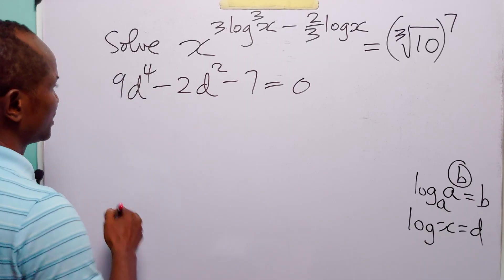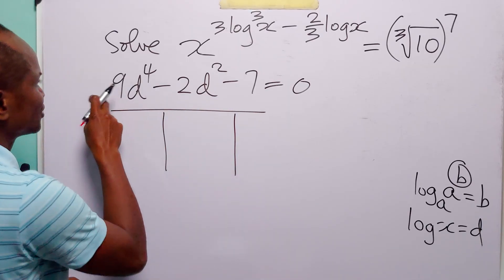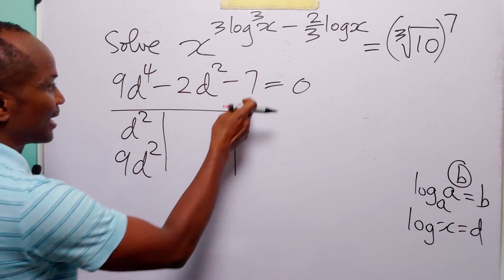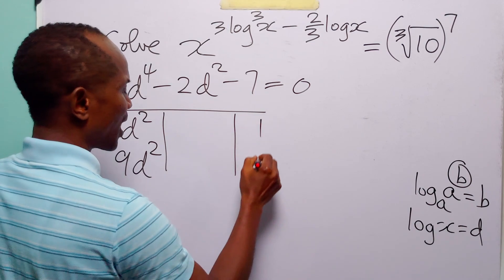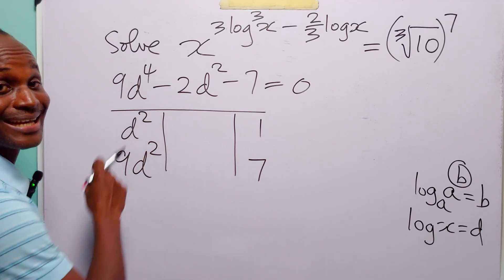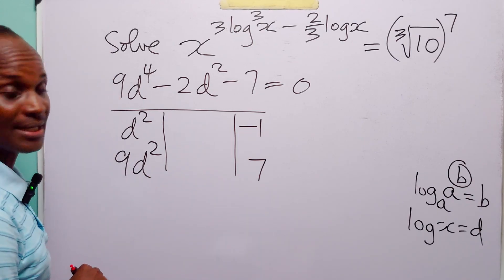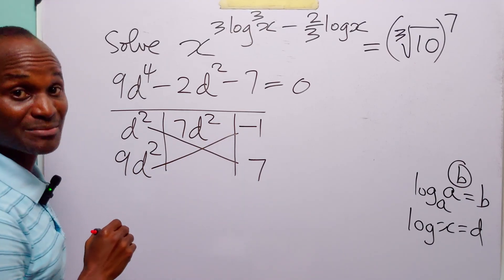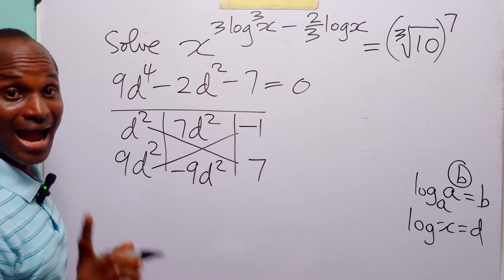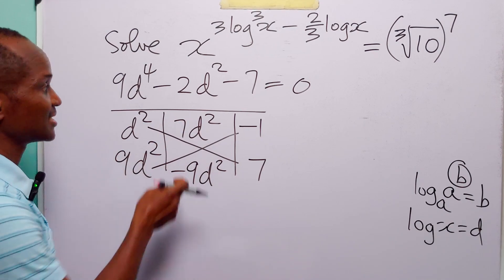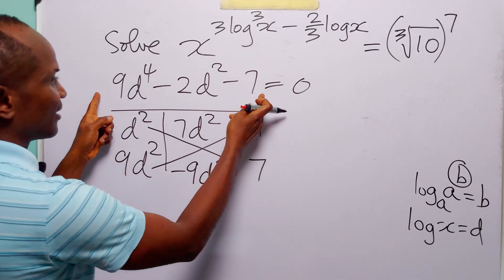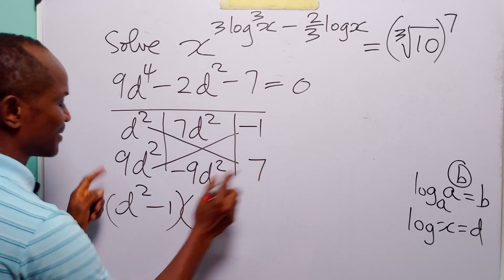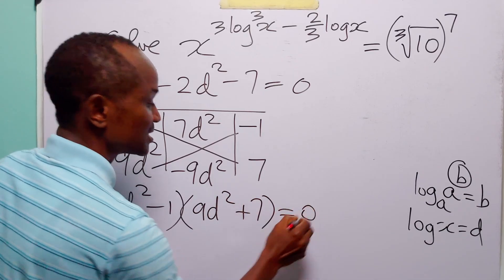Now we can factorize this equation. Let us use the table method. The factors of 9d to the power 4 are d squared and 9d squared, and the factors of minus 7 will be 1 and 7. Since this is negative, let this be negative. We have d squared times 7 giving 7d squared, and 9d squared times minus 1 giving minus 9d squared. Minus 9d squared plus 7d squared gives minus 2d squared. So the factors of this equation are (d squared minus 1)(9d squared plus 7) equals 0.